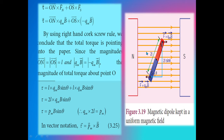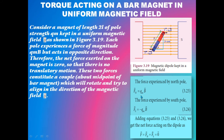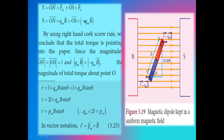The sum of these two force vectors gives ON vector × Fn vector + OS vector × Fs vector. We already know that Fn vector = QmB vector and Fs vector = −QmB vector. Substituting these values by replacing Fn vector and Fs vector: